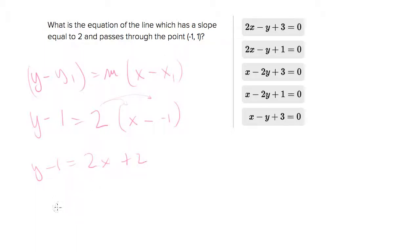So what you'll end up with is y minus 2x and if we subtract 2 from both sides so those cancel out you get y minus 2x minus 3 equals 0.